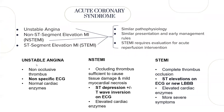In unstable angina, there is a non-occlusive thrombus, non-specific ECG changes, and normal cardiac enzymes. In non-ST elevation MI, there is an occlusive thrombus sufficient to cause myocardial damage but not total occlusion, with ST depression and T wave inversion on ECG and elevated cardiac enzymes. In ST elevation MI, symptoms are more severe with ST elevations or new left bundle branch block on ECG and elevated cardiac enzymes.